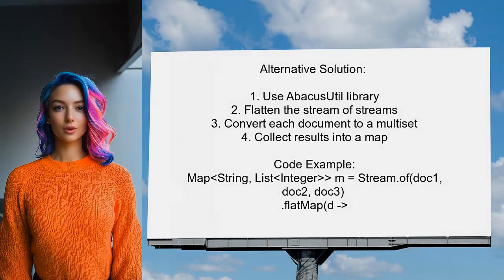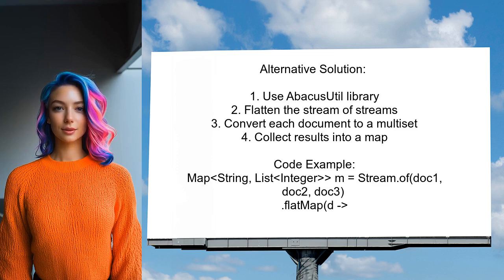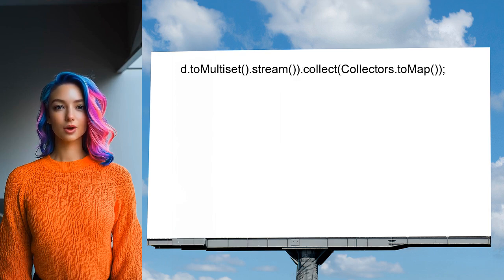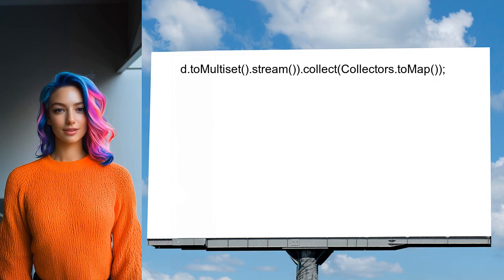An alternative solution suggests using the abacus-util library. They recommend flattening the stream of streams and converting each document to a multiset. This approach collects the results into a map where the keys are words and the values are lists of their counts in each document.